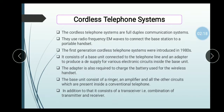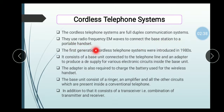The Cordless Telephone System is a Full Duplex Communication System, meaning here we can both transmit and receive information. They use a Radio Frequency EM Wave to connect the Base Station to the Portable Handset. When we use EM Frequency, it is used to connect the Base Station and Handset. The first generation cordless telephone systems were introduced in the 1980s.